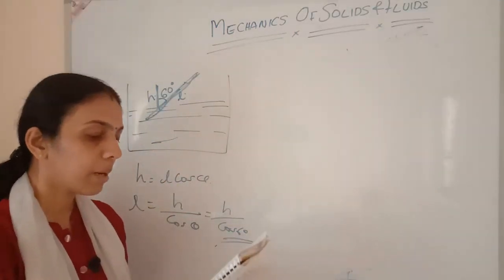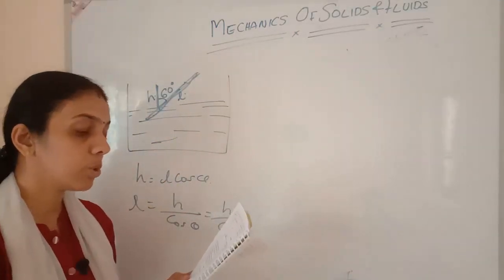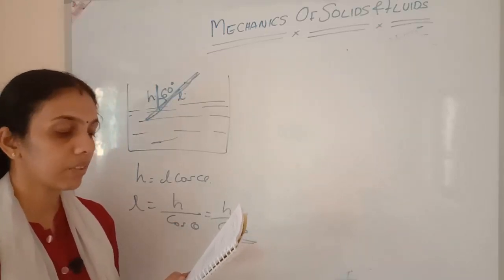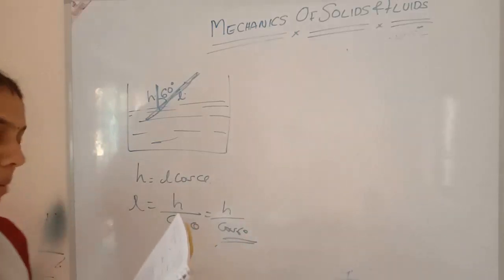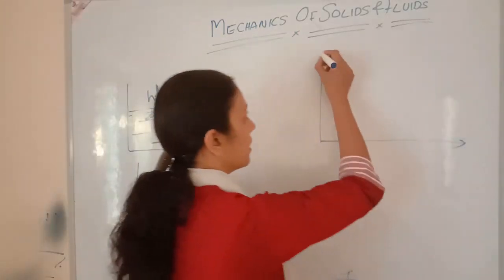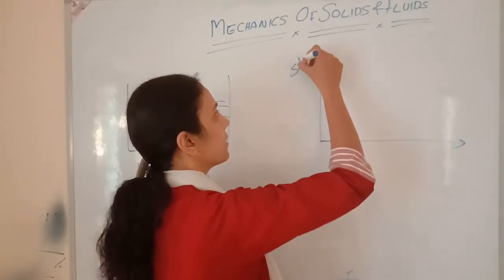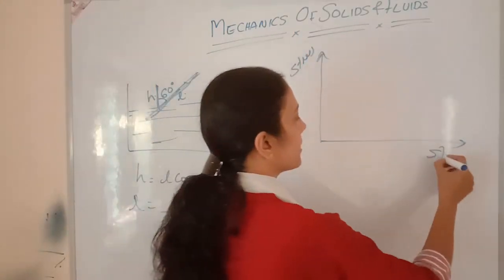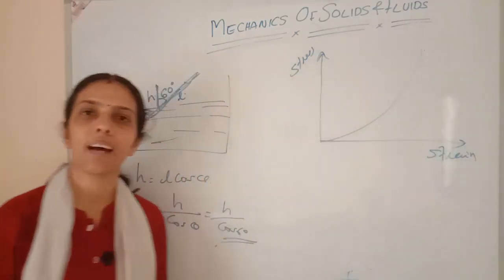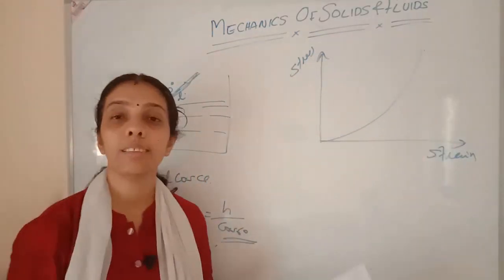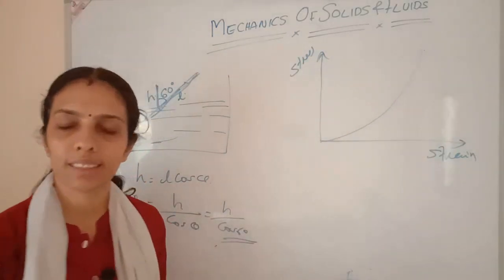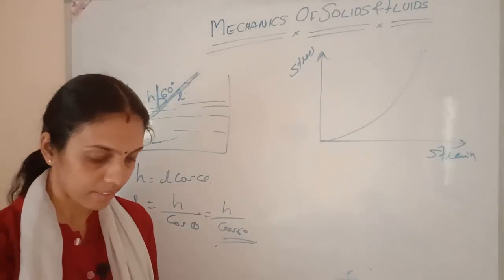A rubber band can be pulled to several times its original length. Draw the stress-strain graph of a rubber band. Rubber band is an elastomer. The stress-strain graph for an elastomer is not a straight line — it forms a loop, and the loading and unloading paths differ. This is how we draw the stress-strain graph for an elastomer like a rubber band.